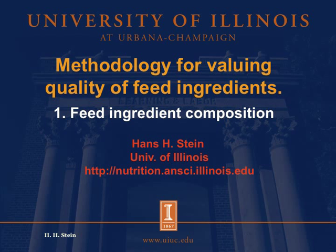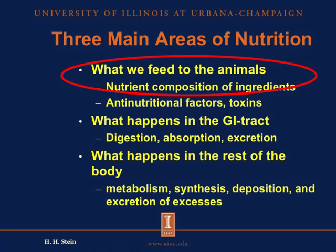The remainder of the presentation will be recorded at a later time. When we talk about nutrition in general, we talk about three main areas. The first area is what we feed to the animals — that means the composition of the feed ingredients that go into our diets, the nutrients, the energies, and also the anti-nutritional factors and maybe toxins if they are present.